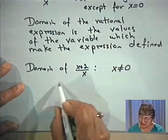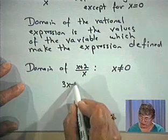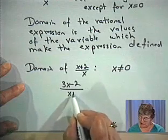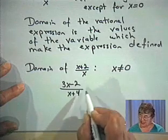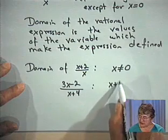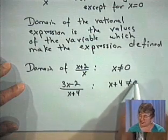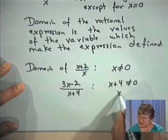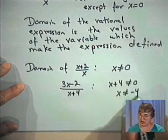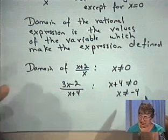Let's consider the expression 3x minus 2 over x plus 4. The domain for this expression is all values of x which do not give us 0 in the denominator — that is, all values of x which are not equal to negative 4.